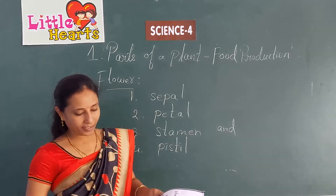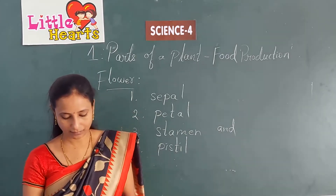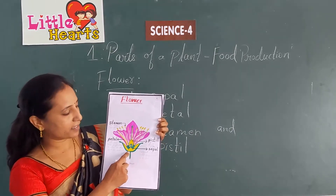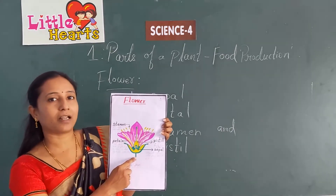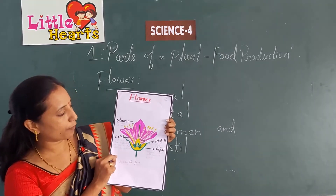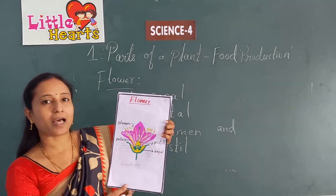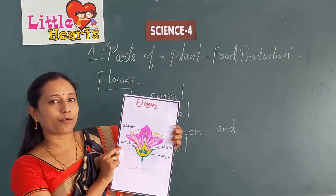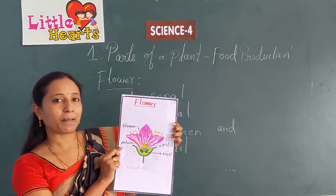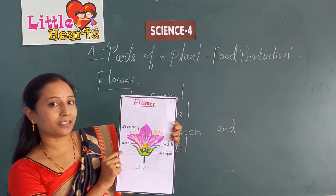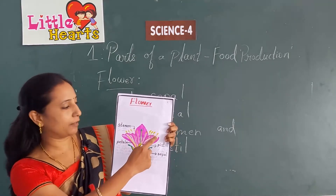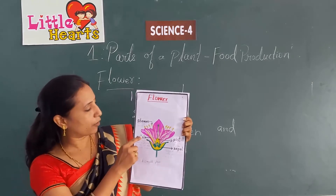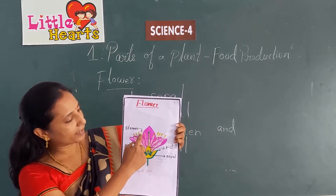Looking at this picture, the first part is the outermost whorl of the flower — that is the sepal. The sepal protects the flower when it is a bud. The second whorl of the flower is called the petal. Petals have bright colors; this flower has a pink color which attracts insects for pollination.